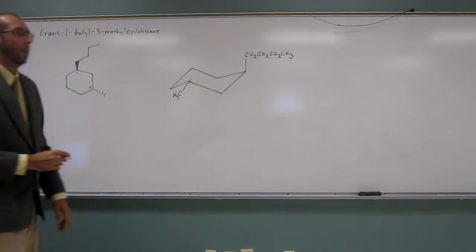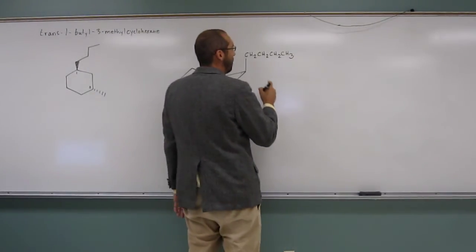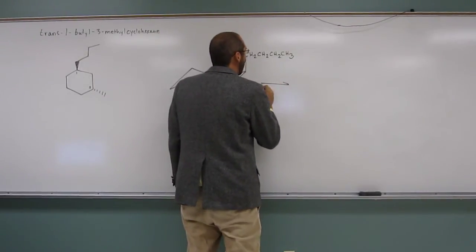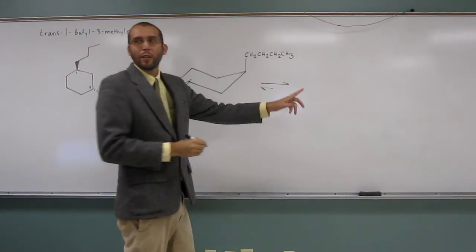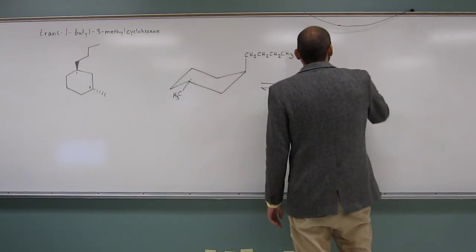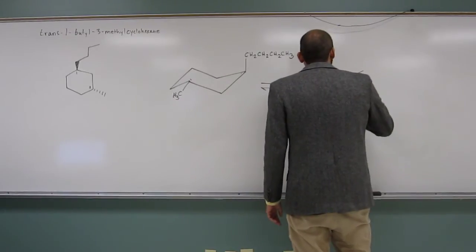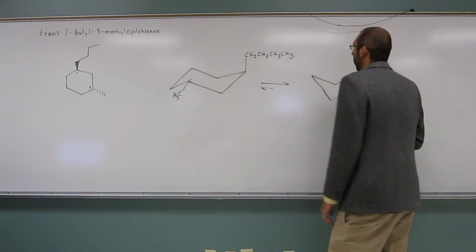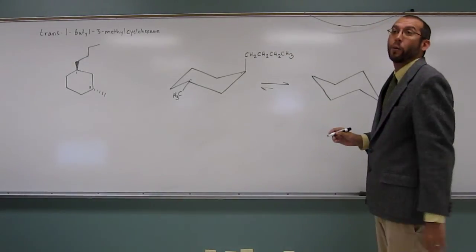Chair flip. So, we're going to do a chair flip, and we're going to put the bigger group in the equatorial position like we want. So, if that happens, that's going to be the more stable conformation, and now I can't remember if we're looking for the more stable or the least stable. But we'll do most of them. Most stable, okay, good.